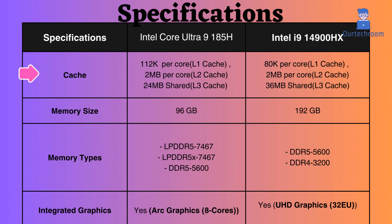The Intel Core Ultra 9 has a higher L1 cache, allowing it to store more frequently used data and instructions directly for the cores. The L2 cache of both processors is the same. However, the L3 cache of the Intel i9 is larger, enabling it to hold more data that multiple cores might need, thereby reducing the frequency of accessing slower system RAM.